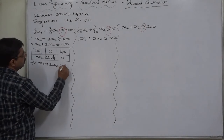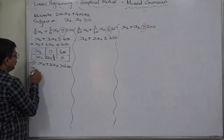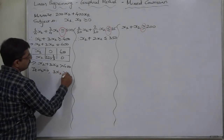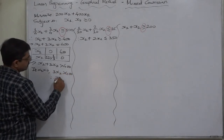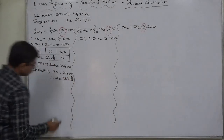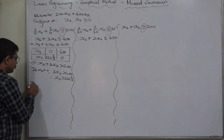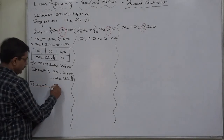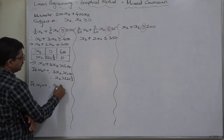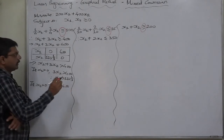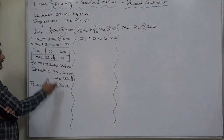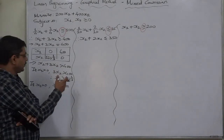If x2 is 0, then x1 equals 400. For the inequality x1 plus 3x2 greater than 400: if x1 takes value 0, then 3x2 greater than 400, meaning x2 greater than 133 and one-third — approximately greater than 133.